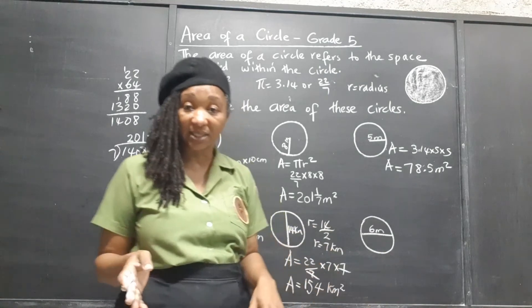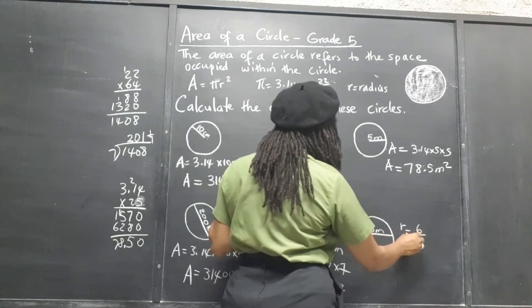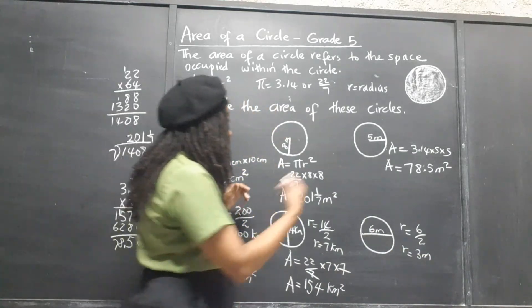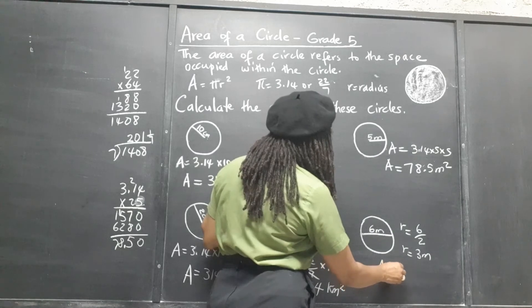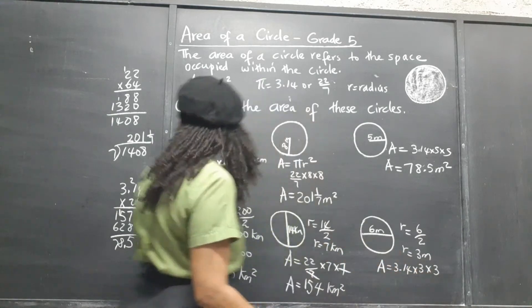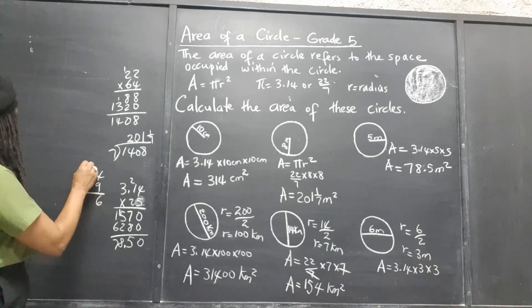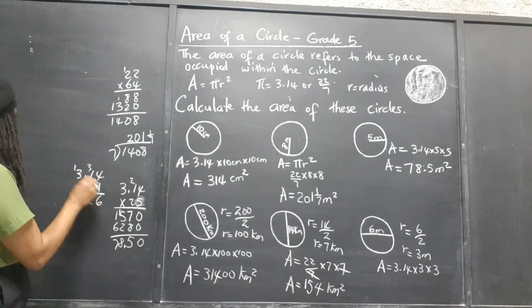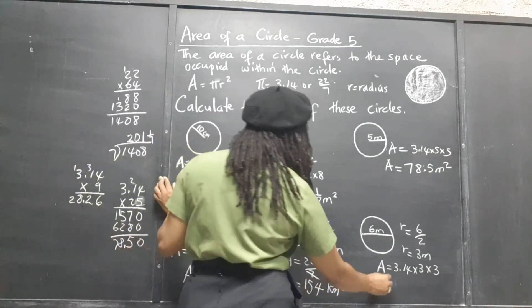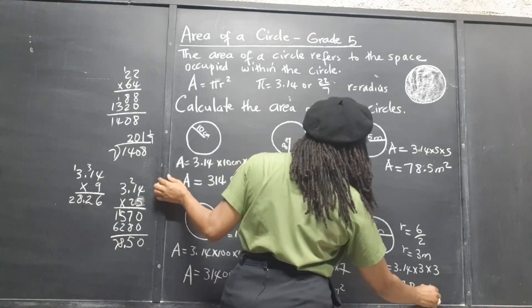So the diameter is 6. We just halve that to get the radius — divide by 2 — so the radius is 3 meters. I'm going to use the decimal form this time: 3.14 times 3 times 3. 3 times 3 is 9, so we work out 3.14 times 9. That gives us 28.26 — two decimal places. So the area is 28.26 meters squared.